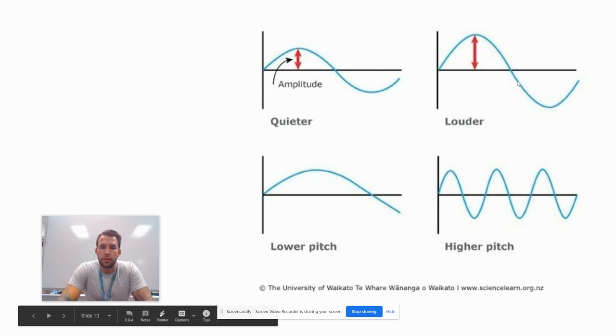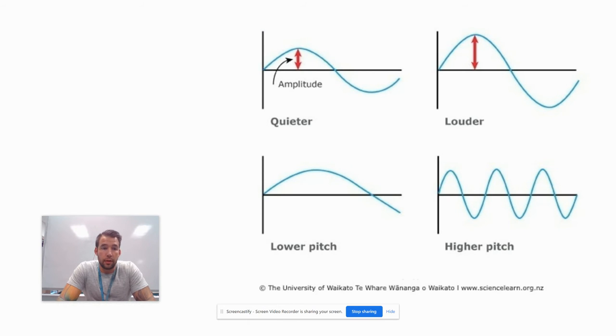When we left off, we were talking about amplitude and frequency. Frequency is how many waves pass by a point in a given second. When the waves are really bunched up here in the bottom right corner, that is a high frequency wave. There's a lot of waves passing by a given point in a given second. So the higher the frequency, the higher the pitch.